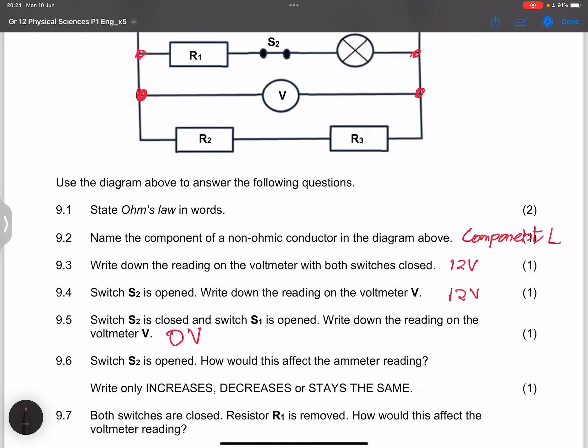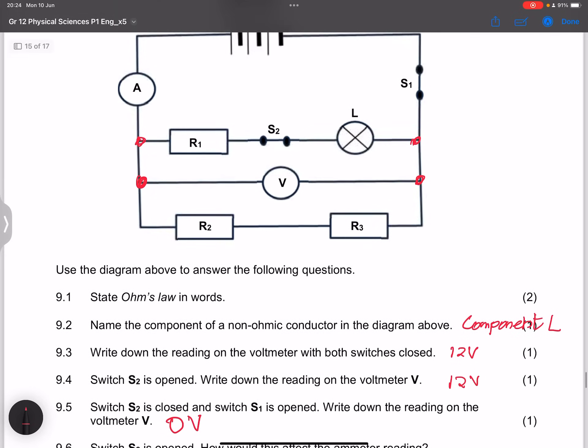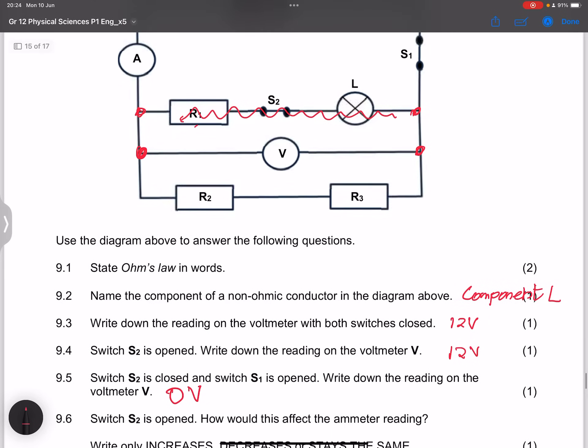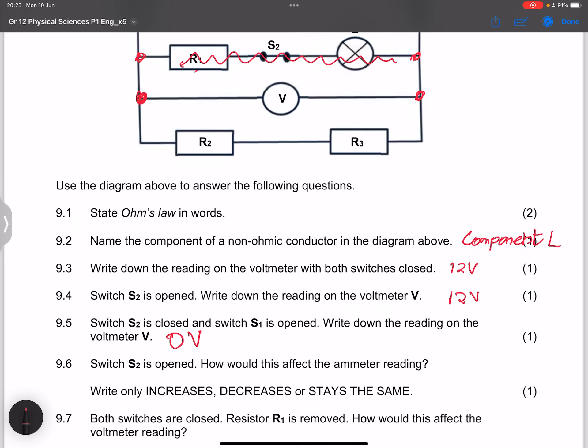They say switch S2 is opened, how would this affect the ammeter reading? Write only increases, decreases, or stays the same. Now the moment we open switch S2, that means that we are actually removing resistor R1 and that light bulb over there. So what this does is that it will increase the resistance. Now remember, once you remove resistors in parallel, it means that we're going to actually increase the external resistance of the circuit.